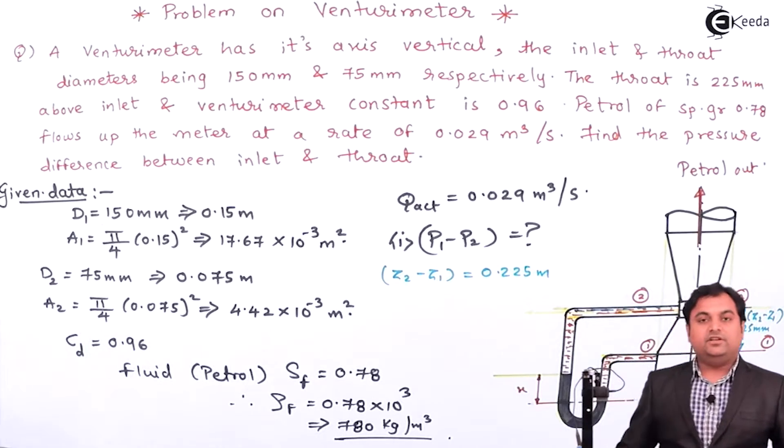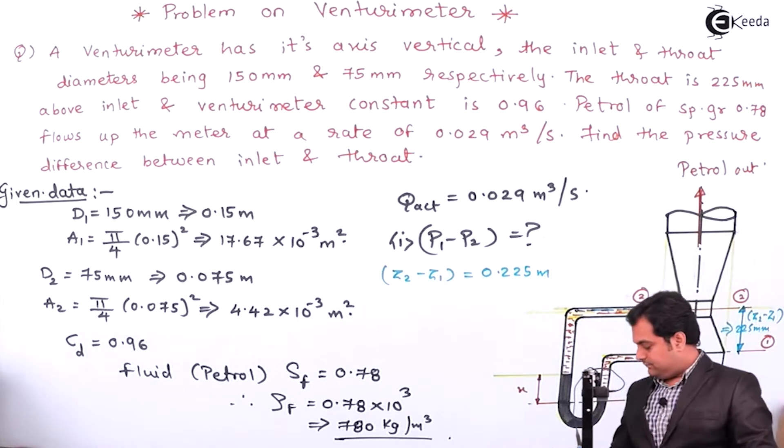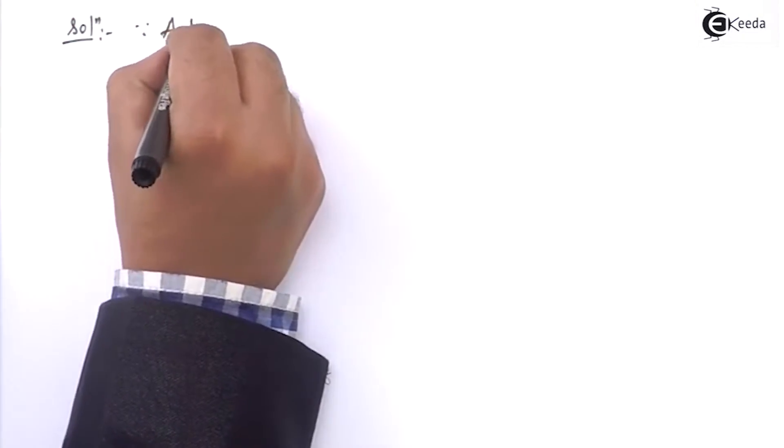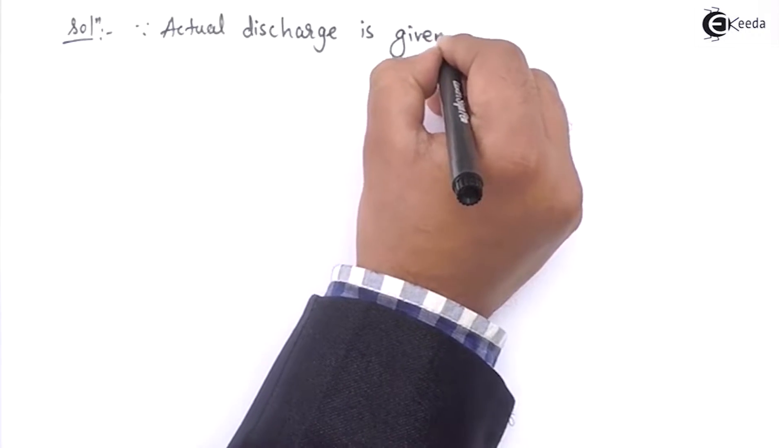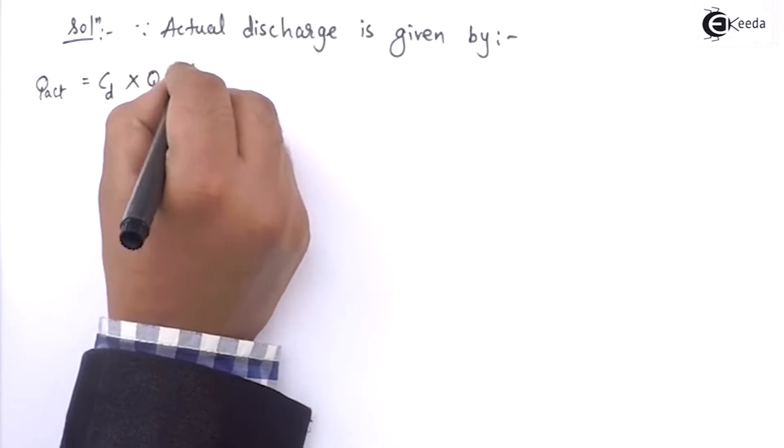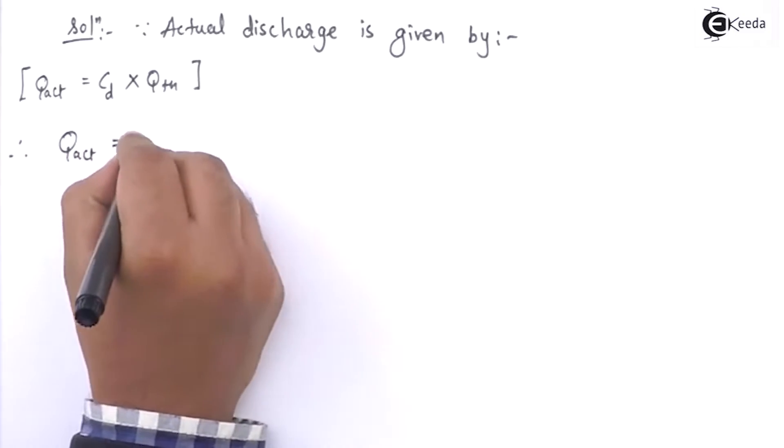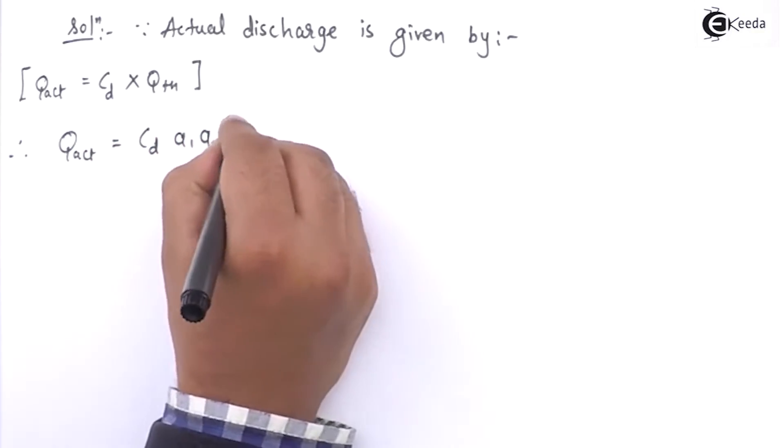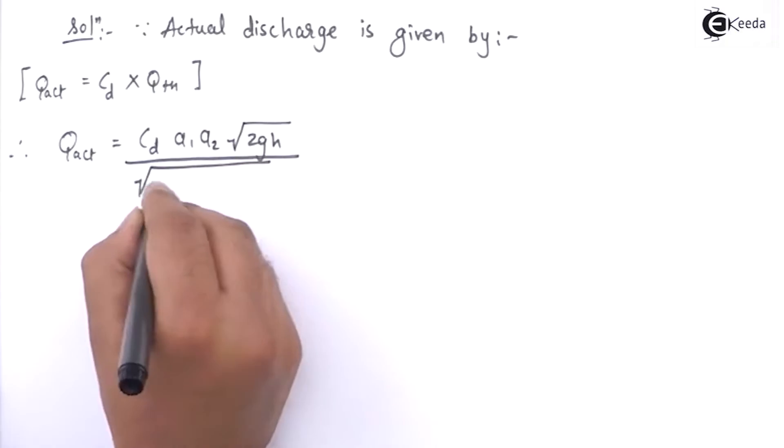When we have understood everything here and the actual discharge is given, let us start with the solution. Solution will be started from actual discharge itself. Since actual discharge is given by CD into Q-theoretical, which is coefficient of discharge, and Q-theoretical will be A1 A2 root 2gh upon root of A1 square minus A2 square.